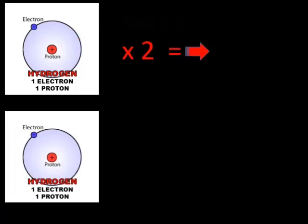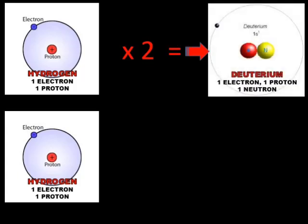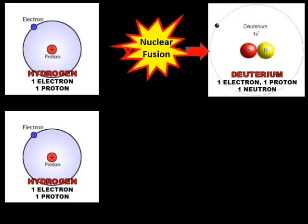If two hydrogen nuclei come together in the heat and pressure of a star, such as our sun, they can fuse together, creating a new single nucleus, namely the nucleus of deuterium. This is the fusion process.